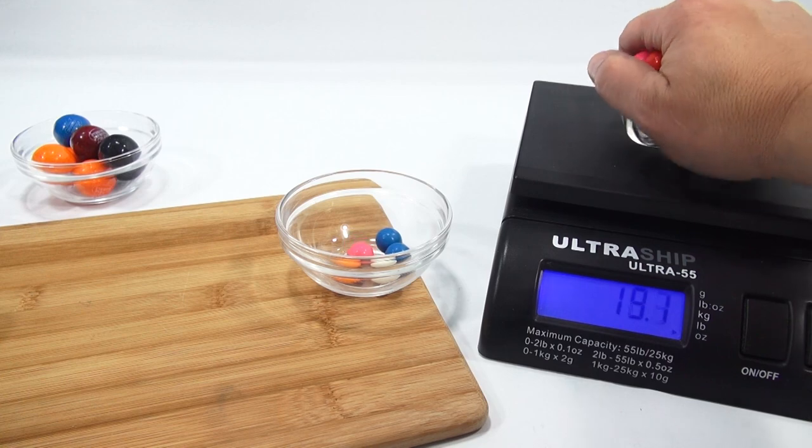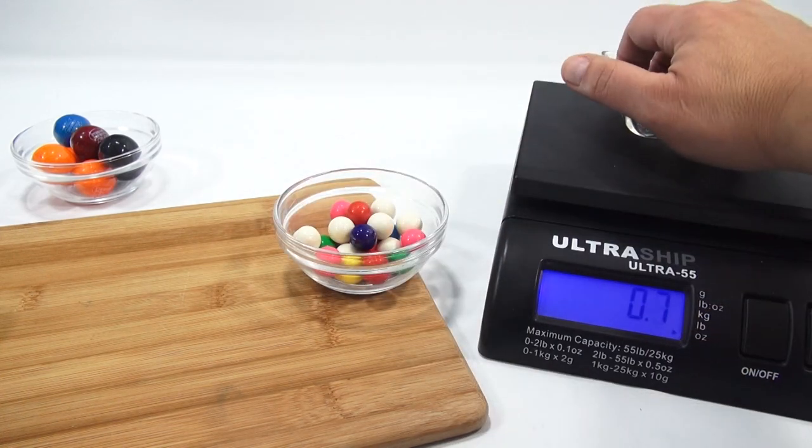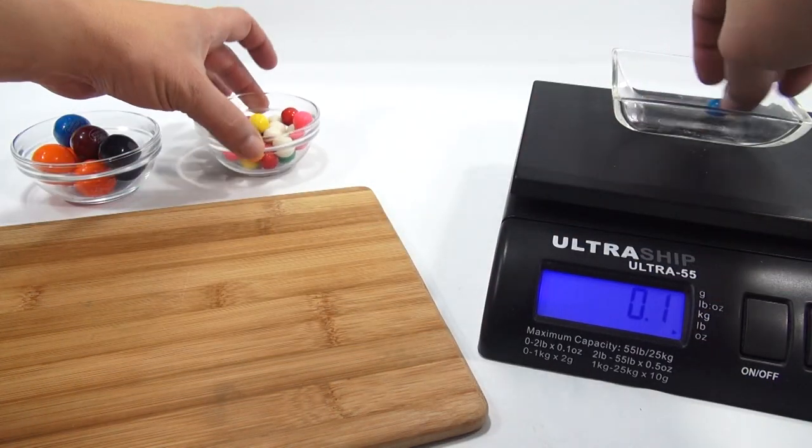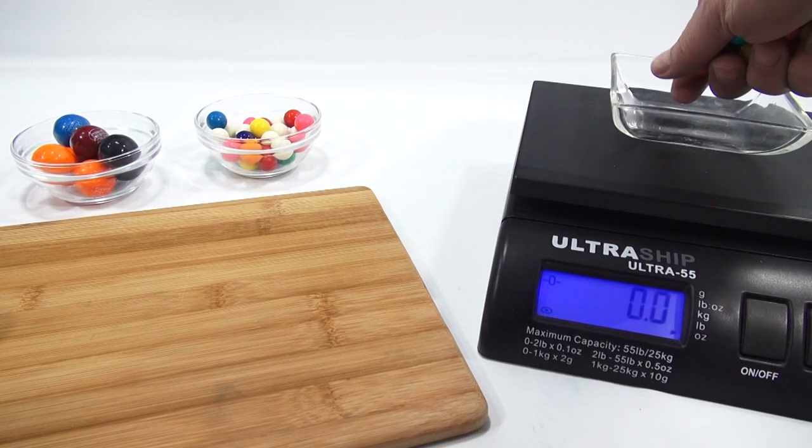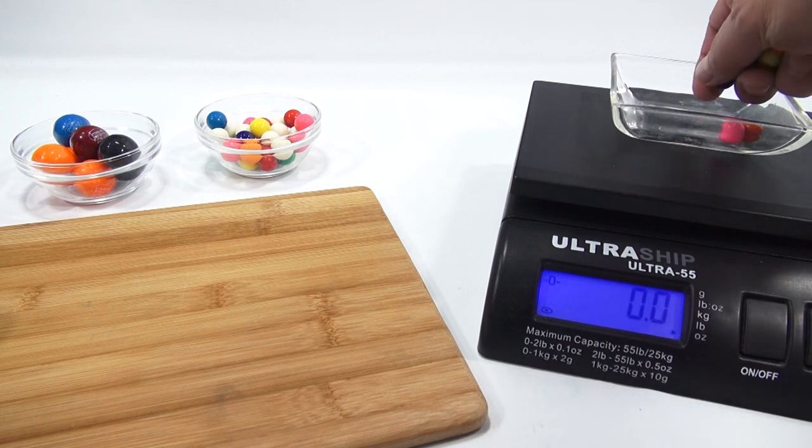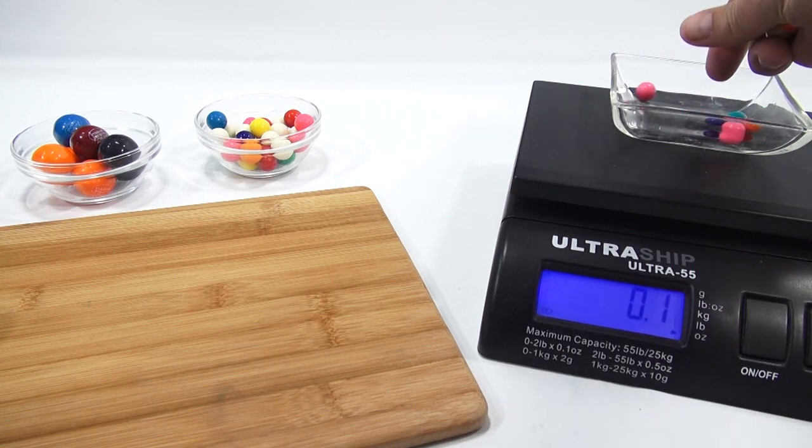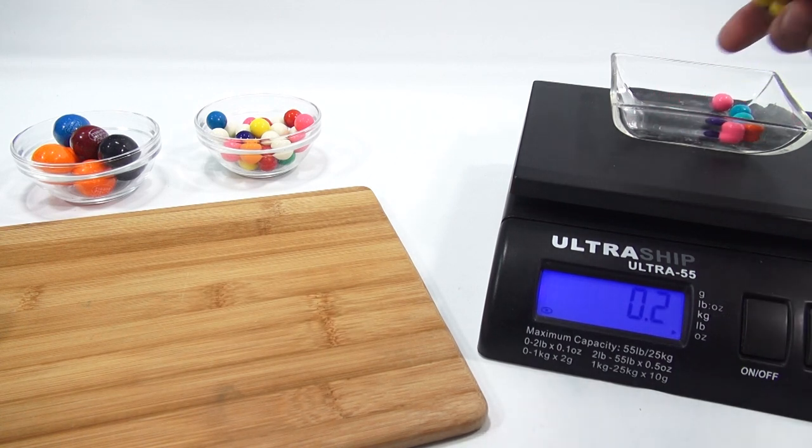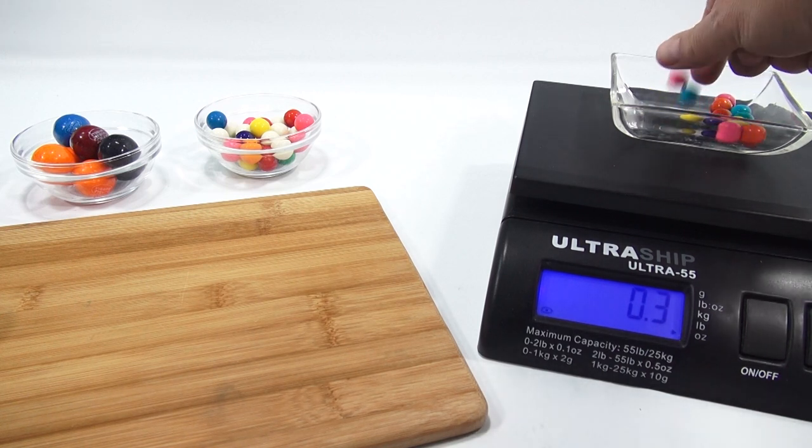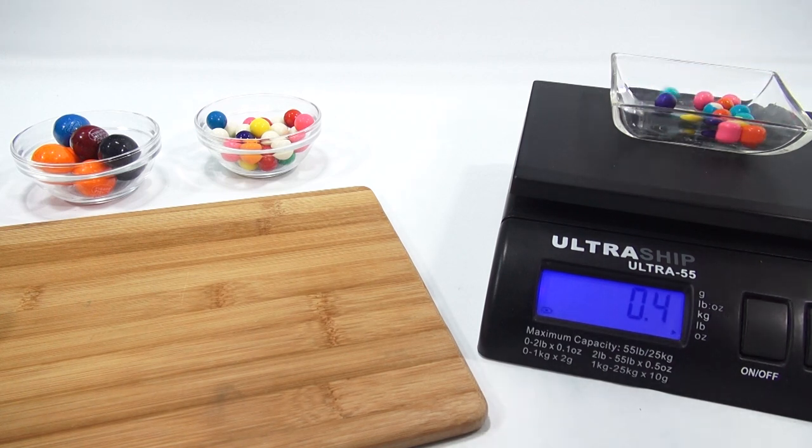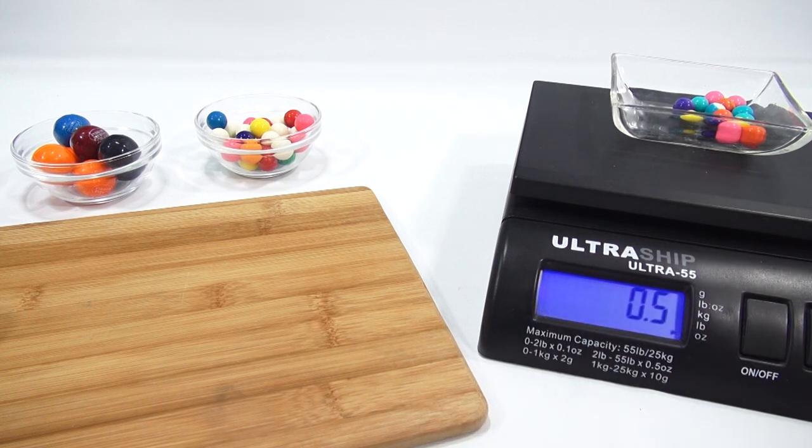Now those other little ones, those super teeny ones, it's going to take a lot. But let's see what it takes to get half an ounce. Two, four, six, eight, ten, twelve, fourteen. Fourteen for half an ounce. So you do the math on that one.